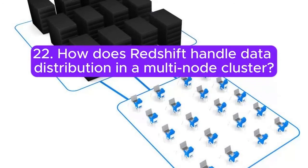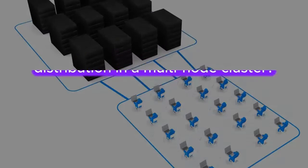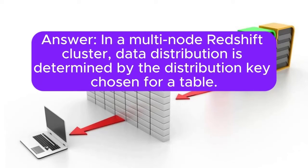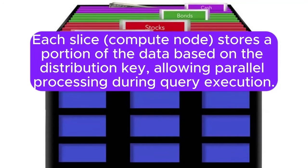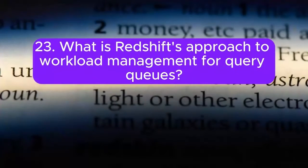Question 22: How does Redshift handle data distribution in a multi-node cluster? Answer: In a multi-node Redshift cluster, data distribution is determined by the distribution key chosen for a table. Each slice (compute node) stores a portion of the data based on the distribution key, allowing parallel processing during query execution.